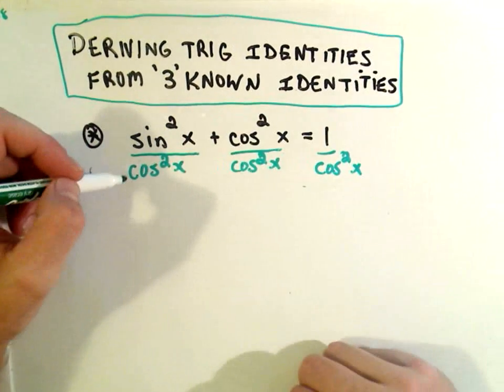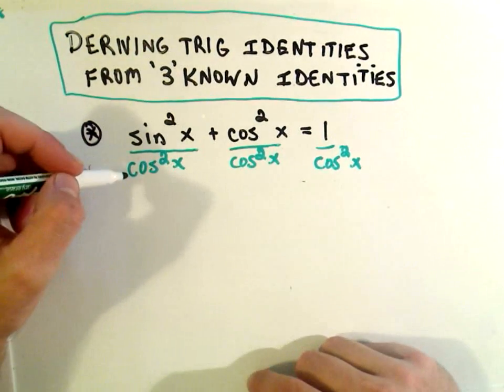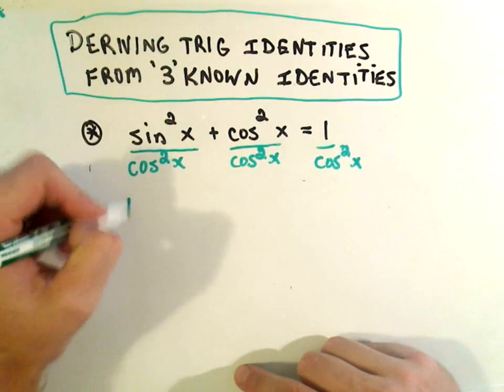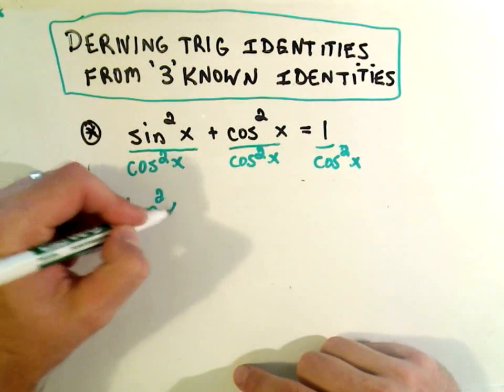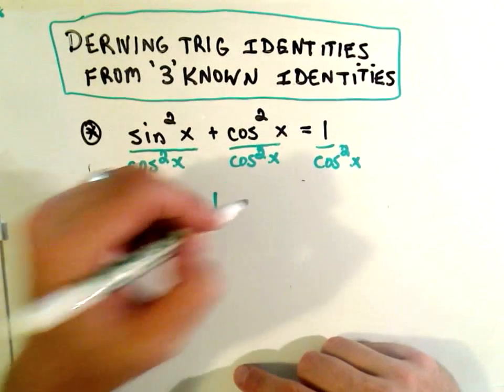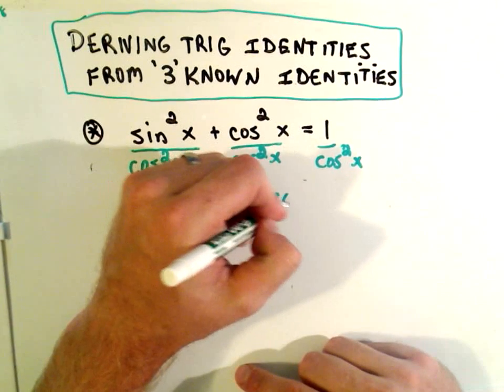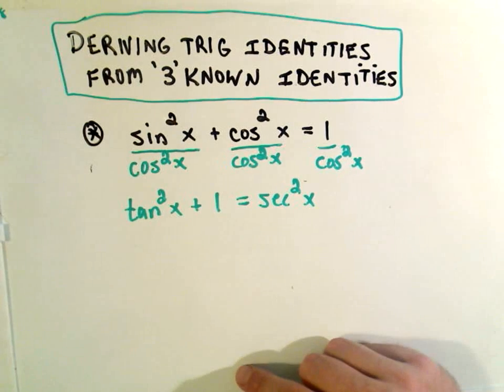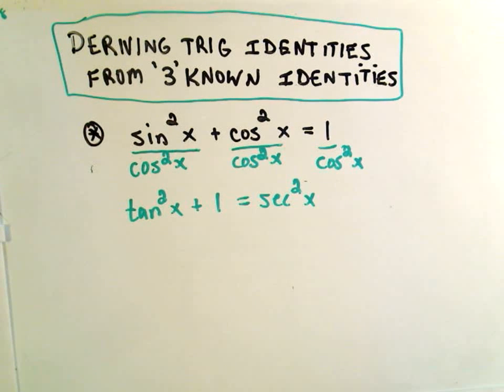So sine over cosine is tangent, so sine squared over cosine squared will be tangent squared. Cosine squared over cosine squared is one. And then one over cosine squared is secant squared. So there's another trig identity.